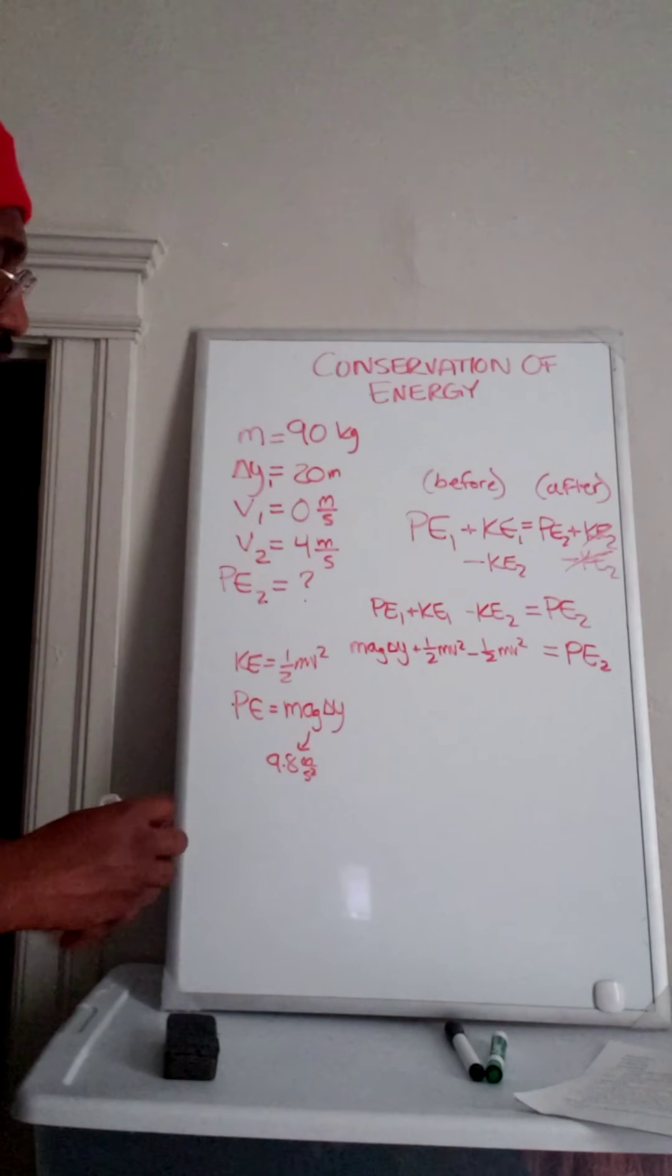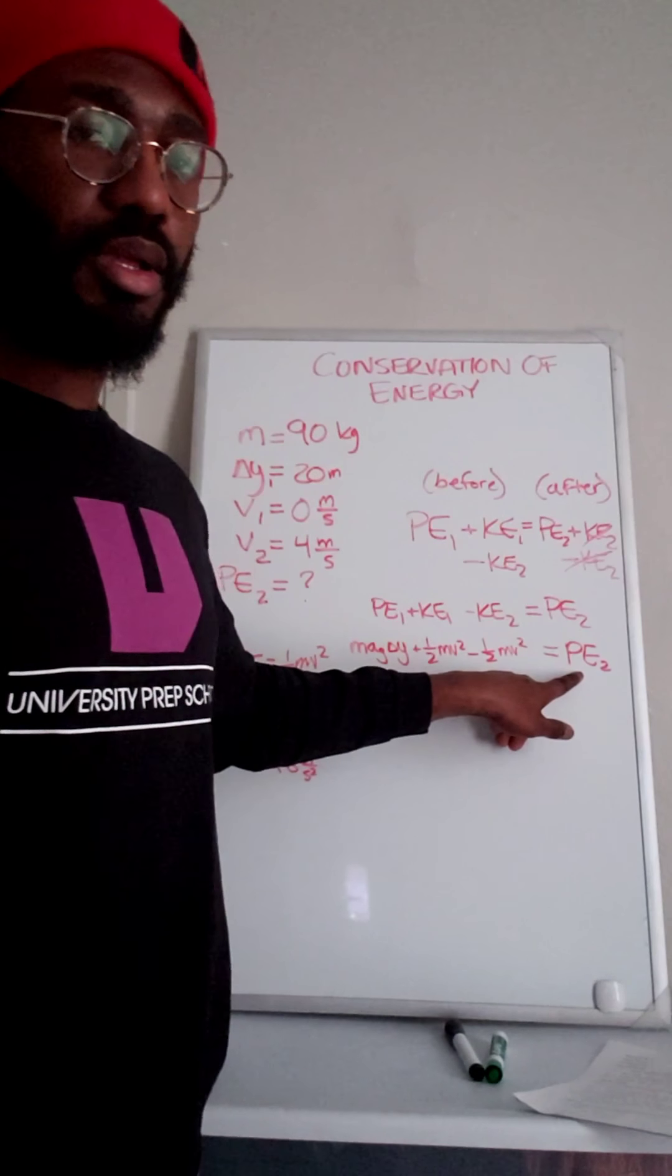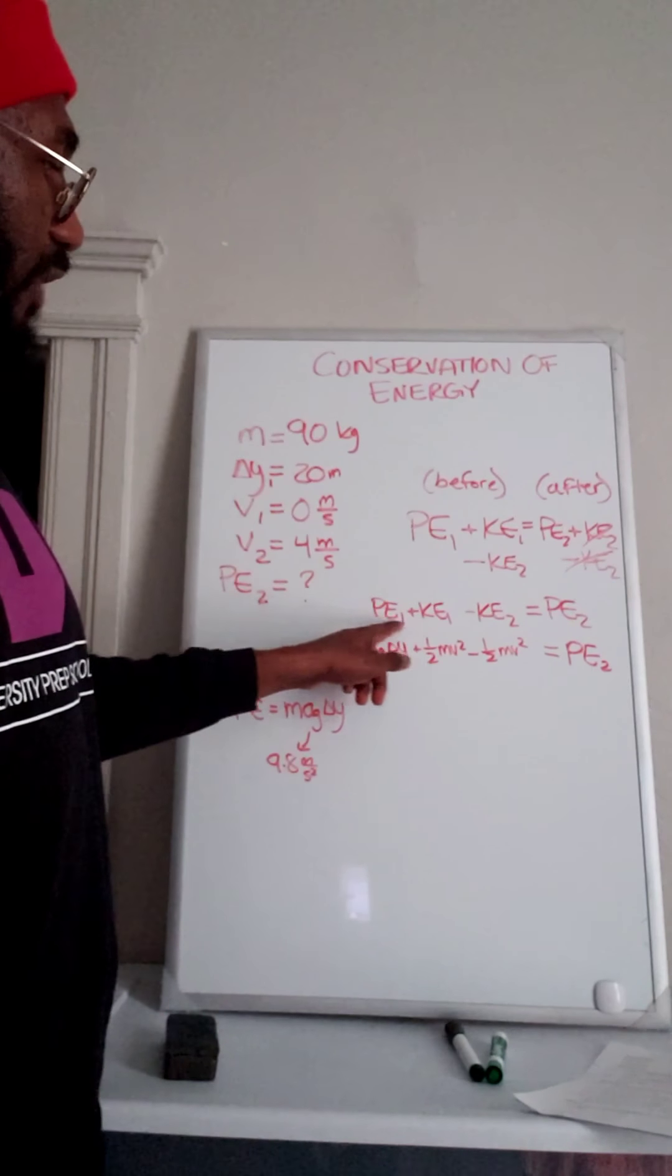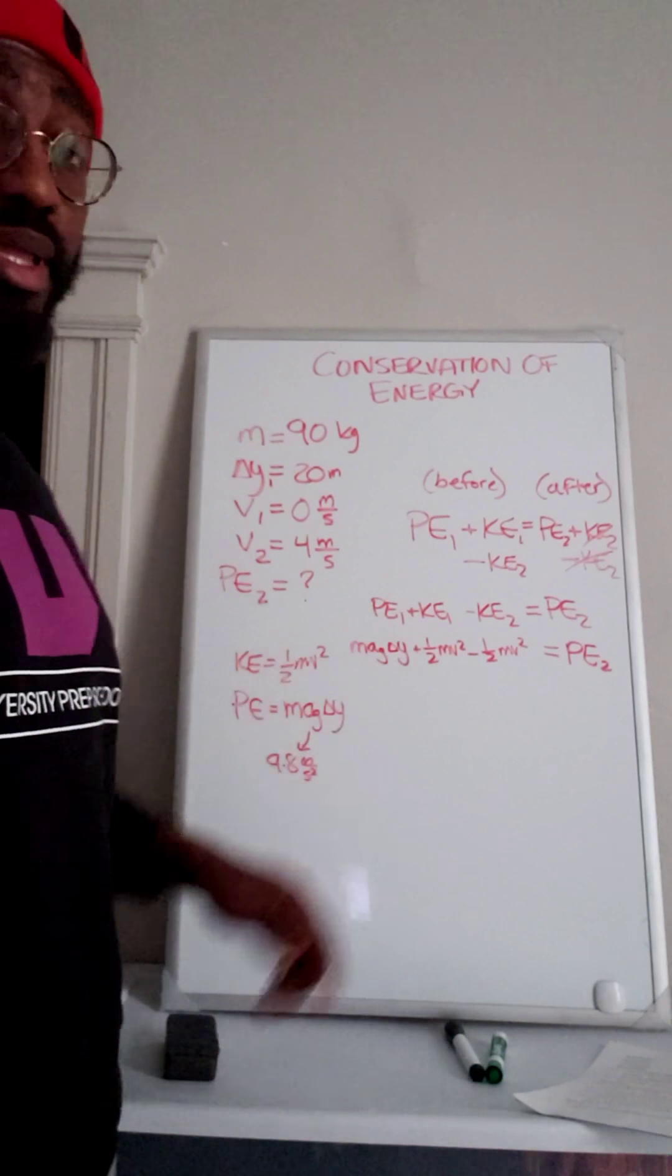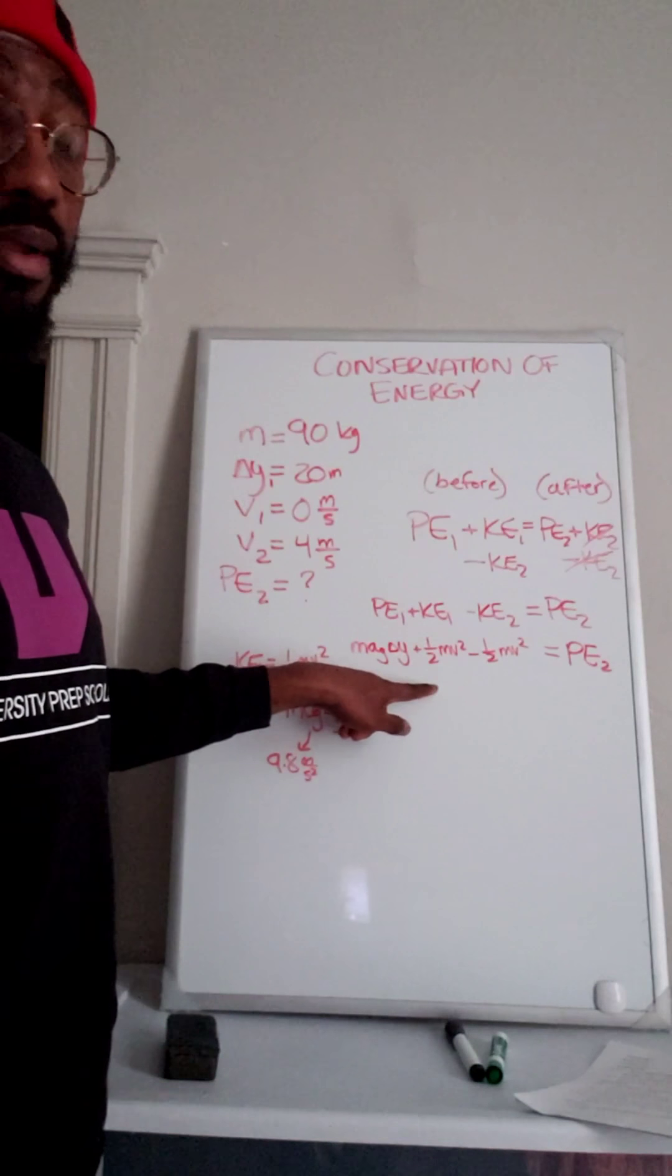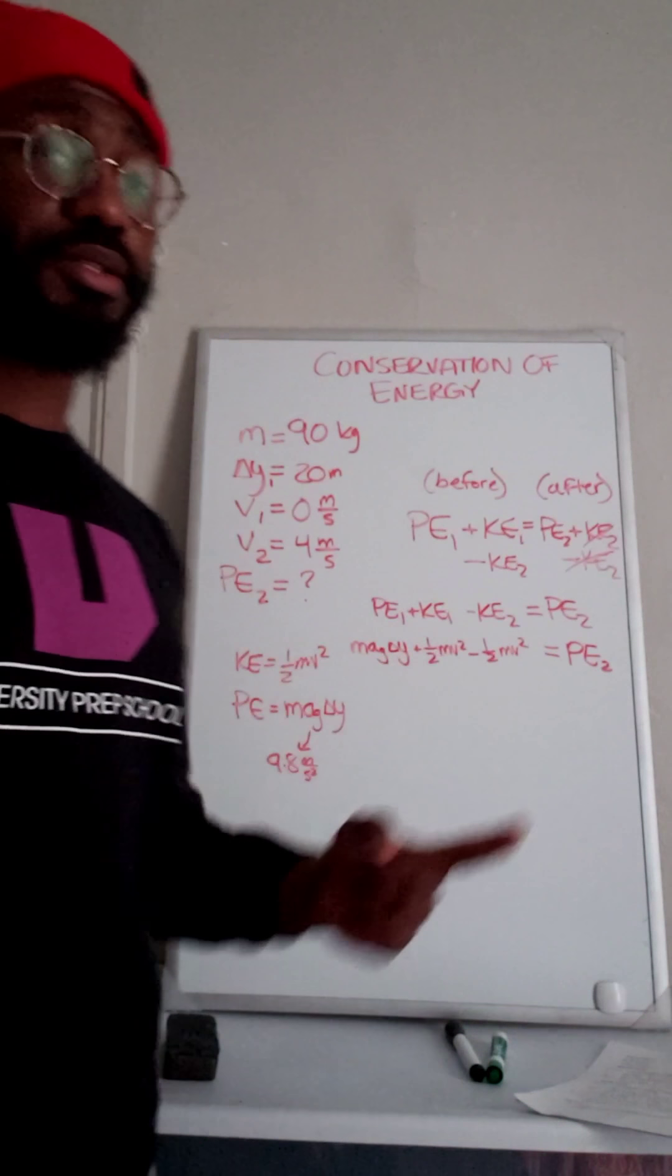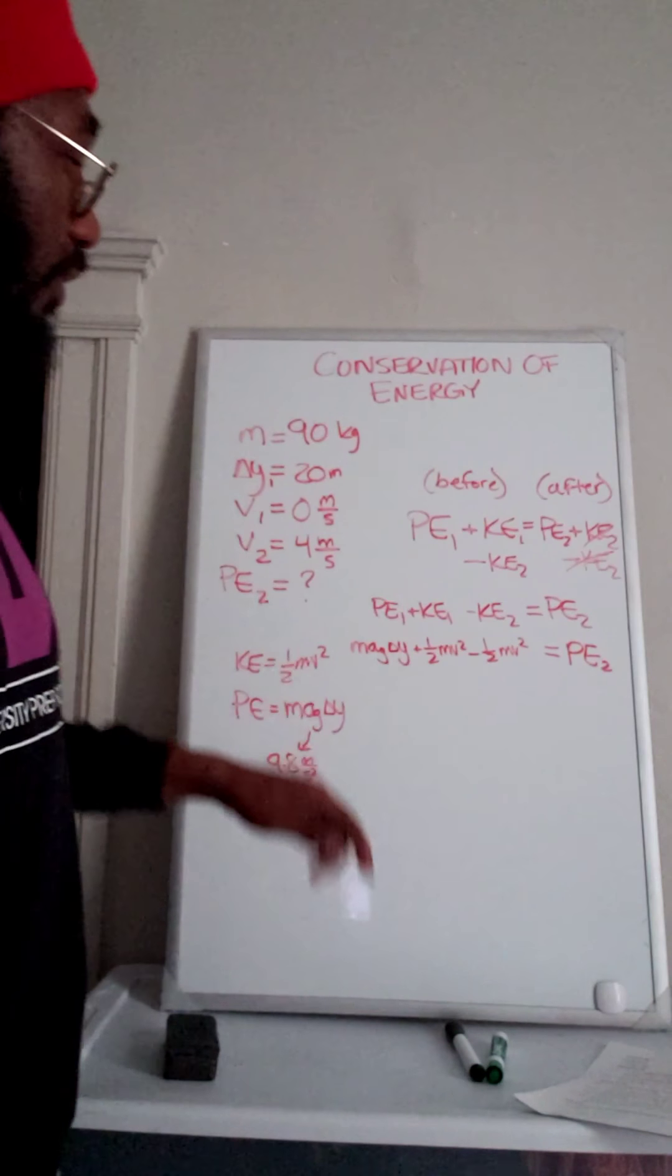For starters, why didn't we break apart PE2? Well, the reason we didn't break it apart is because we're looking for PE2. In these other variables, we're not looking for KE2 or KE1 or PE1. We don't know what those are. That's why we had to break them apart. But we don't want to break this apart because that's exactly the variable we're looking for.